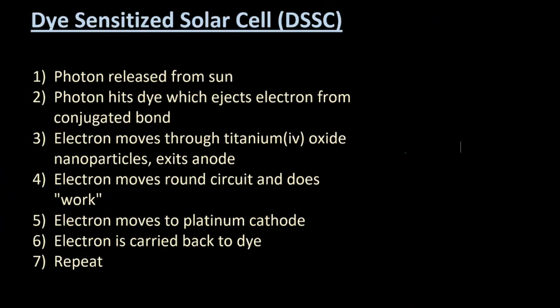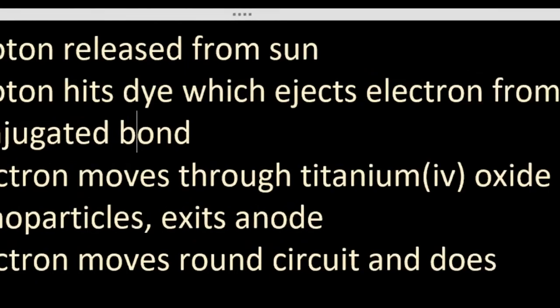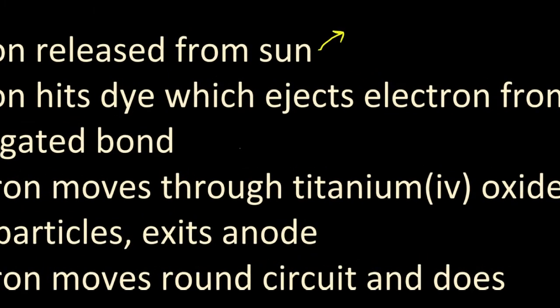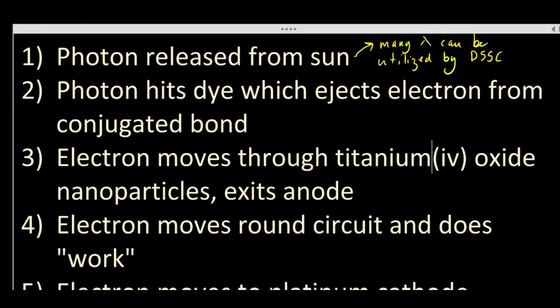These are the seven steps and they've only asked quite trivial questions about this. So step one, the photon is released from the sun. Now the sun's different wavelengths of photons can be used in this solar cell. That's a byproduct of the nanoparticles, so many different wavelengths can be used.